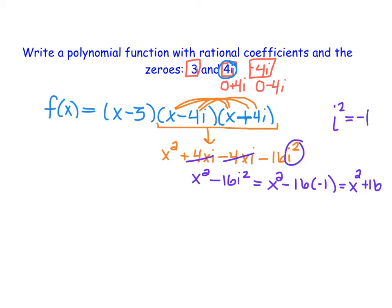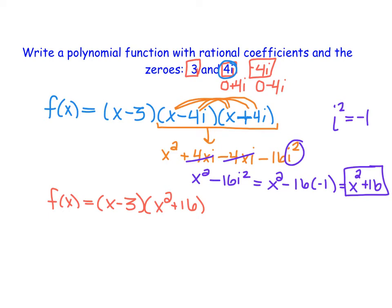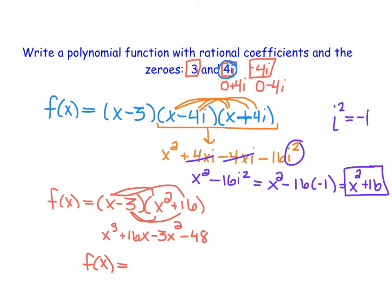We rewrite our i squared terms, and by multiplying out the two conjugates we end up with a polynomial that no longer contains i. So we now have x minus 3 times x squared plus 16. Multiplying these out: x times x squared is x cubed, x times 16 is 16x, negative 3 times x squared is negative 3x squared, and negative 3 times 16 is negative 48. Rewriting in standard form gives us x cubed minus 3x squared plus 16x minus 48.